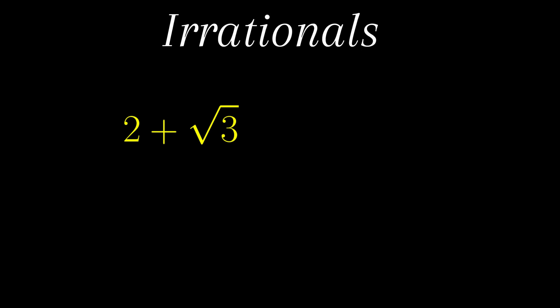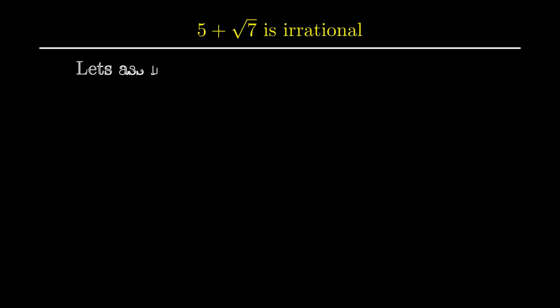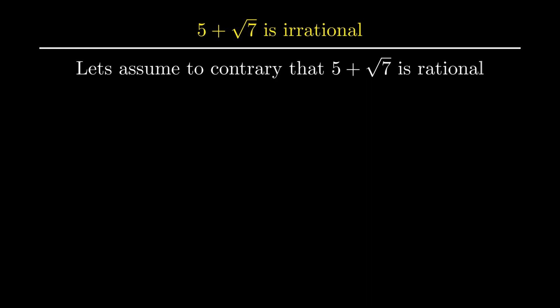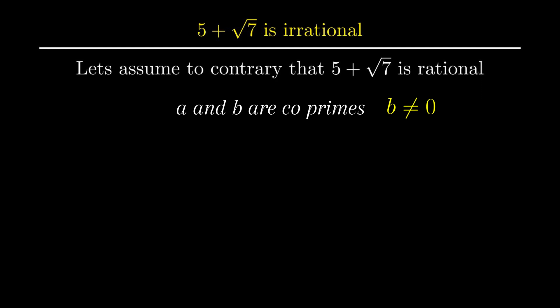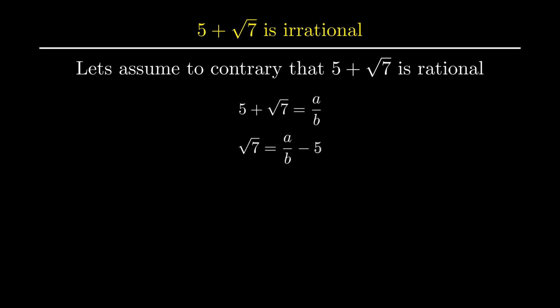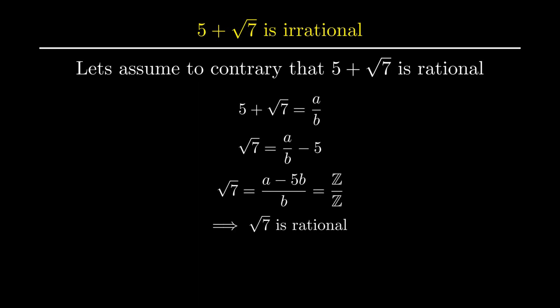Moving on to the next type: if a rational number is added, subtracted, multiplied, or divided by an irrational number, the resulting number is always irrational. Let's prove this. Assume to the contrary that 5 plus root of 7 is rational. Therefore there are two coprimes a and b such that b is not equal to zero, giving us 5 plus root of 7 equals a over b. Transposing 5, root of 7 equals a over b minus 5. Taking the LCM, root of 7 equals a minus 5b over b.